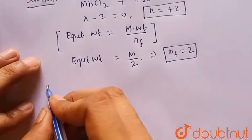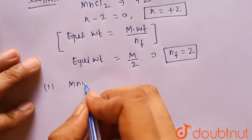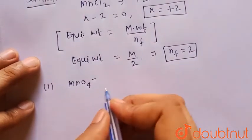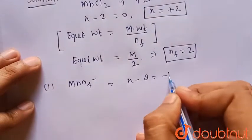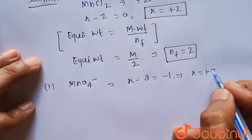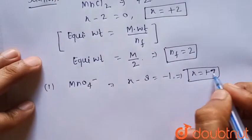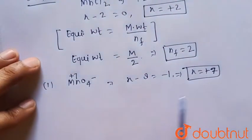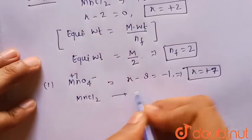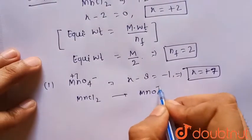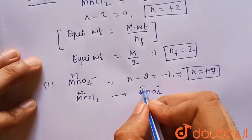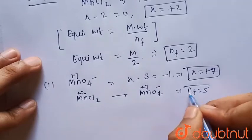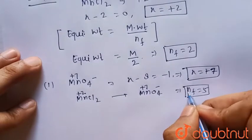Consider the first option, MnO4⁻. The oxidation number of manganese: x − 8 = −1, so x = +7. When MnCl2 (Mn = +2) is converted to MnO4⁻ (Mn = +7), the change in oxidation state is 5, so n-factor = 5. This is not our desired answer.